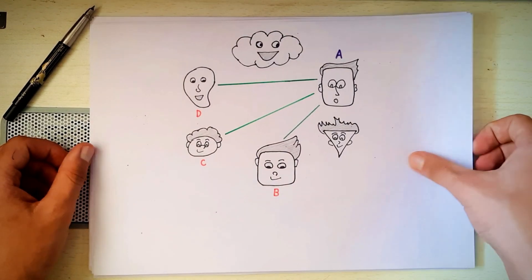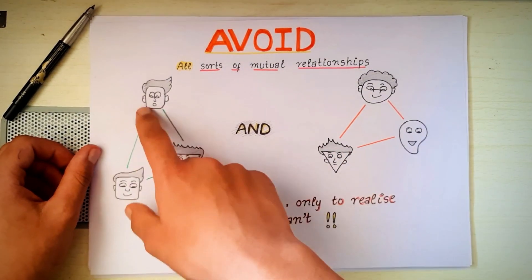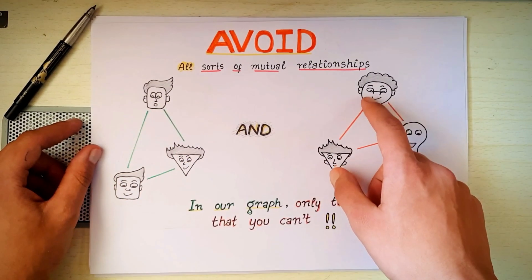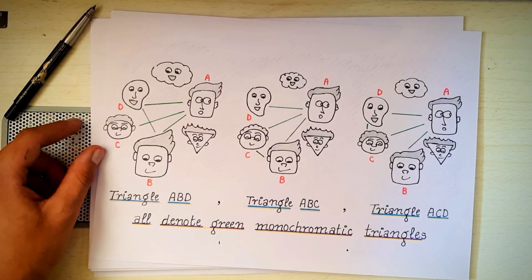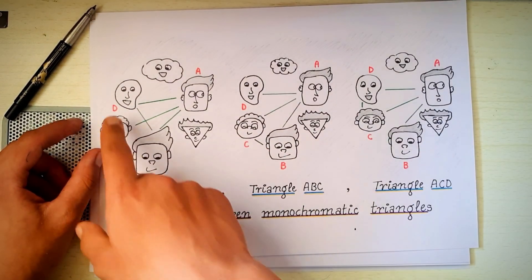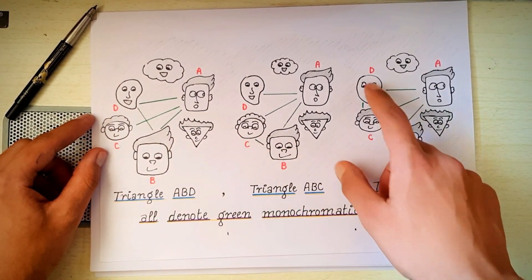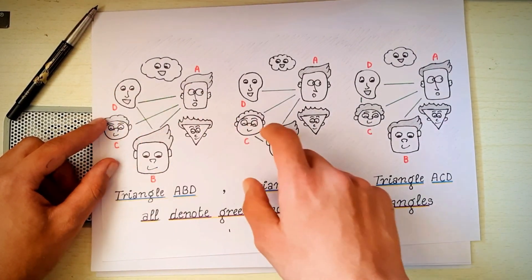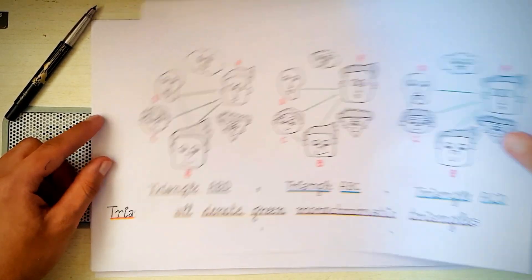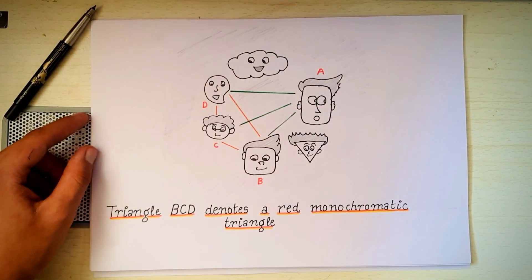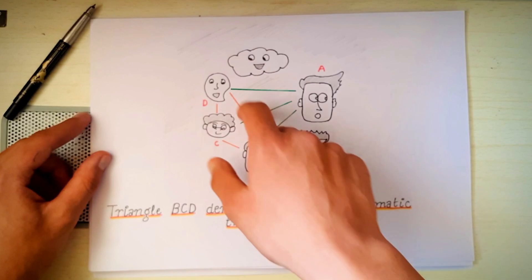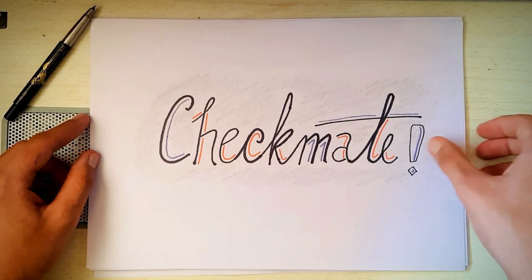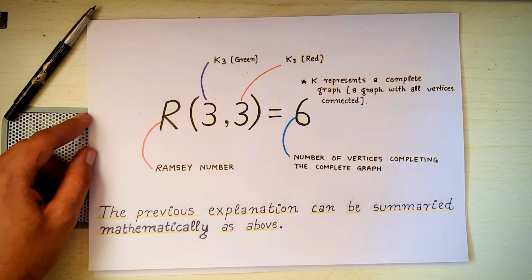Try hard enough not to come across any monochromatic triangle, be it red or green. If we study the relationships between the friends of A, we can notice that if the connecting line between any two is green, we will get a green monochromatic triangle. And if we try to avoid it by coloring all 3 lines as red, we will end up with a red monochromatic triangle. So, there is no way to dodge both types of mutual relationships simultaneously.